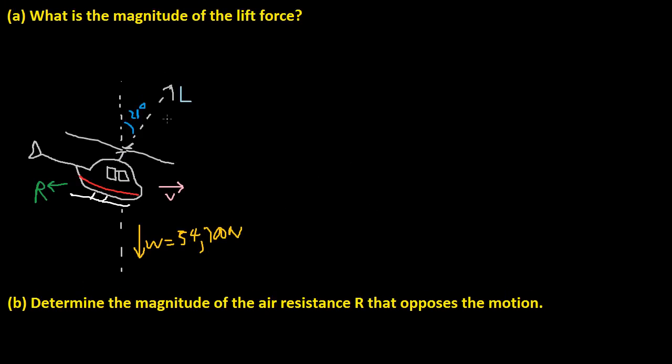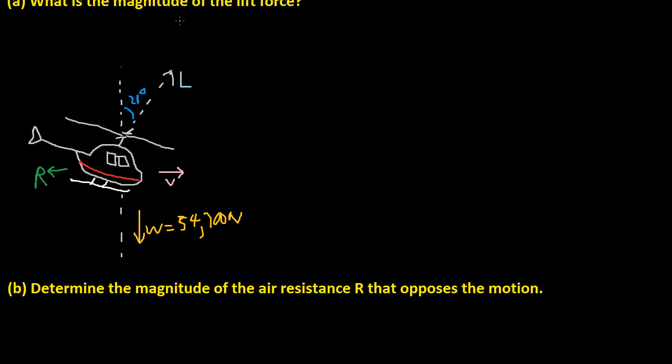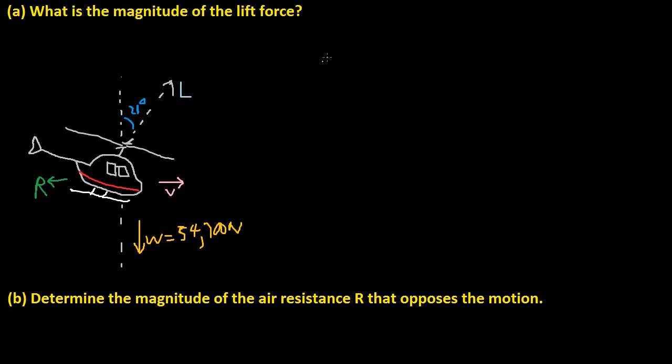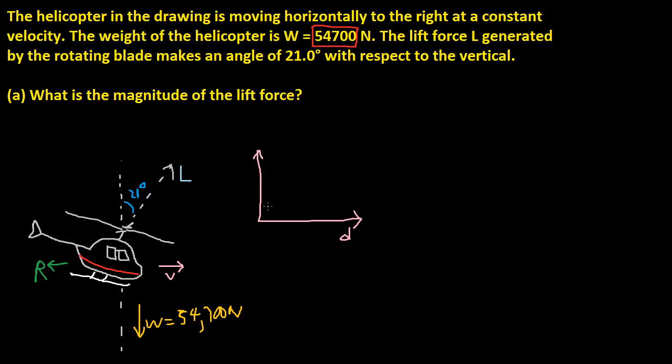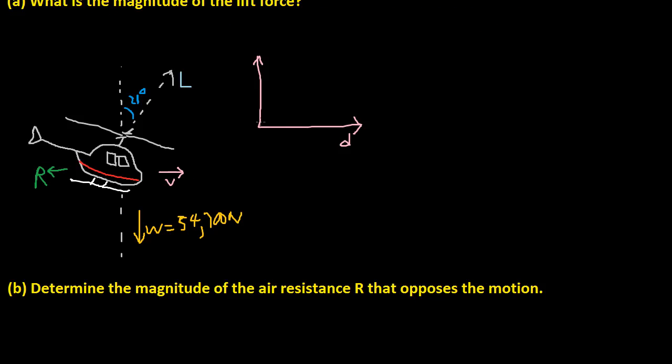We're trying to figure out L, the magnitude of the lift force. Let's look at the direction of motion of this helicopter. The helicopter is moving towards the right and not up or down, so we can denote the x-axis as d. We know this is L, and this is 21 degrees. Let's calculate this angle right here, which is 90 minus 21, or 69 degrees.